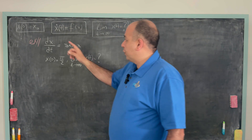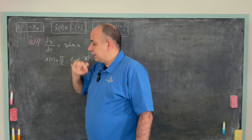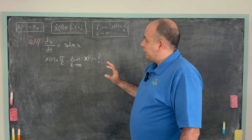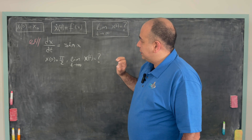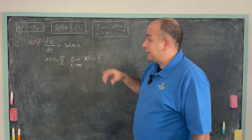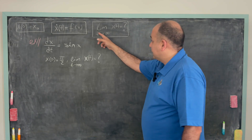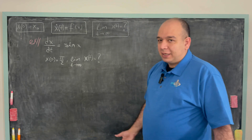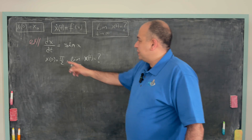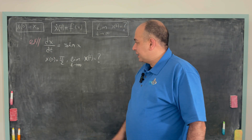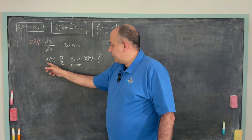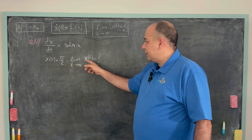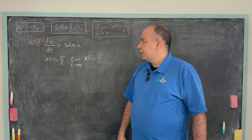We will have an initial condition, and in the type of problems we'll be dealing with, we will be asked to find this limit. Here we have a typical example: dx/dt is given as sin x, x(0) = π/2, and they ask us to find this limit.